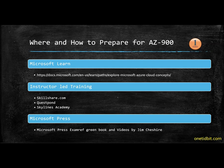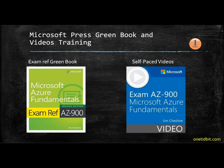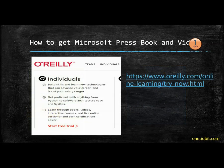One of the most important materials to prepare for this exam is from Microsoft Press, which released a second edition for AZ-900 — famously known as the Green Book Exam Reference — and a video by James Cheshire. This book costs around $15 and the video costs more than $30. If you find these resources too costly, you can go to the O'Reilly online learning website and start a free trial.